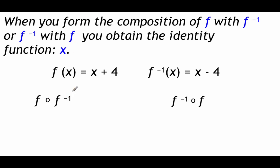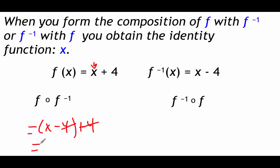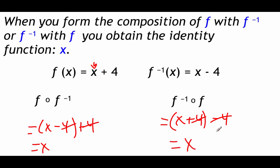If we go f composed with the inverse of f, we take this function f of x, and right where we see the x value, we plug in x minus 4. So it's going to say x minus 4 plus 4. The minus 4 and the plus 4 cancel each other out, so we're left with just x. If we run it the other way — the inverse composed with f — we take x minus 4 and plug in x plus 4 for that x value. So we get x plus 4 minus 4, and again the plus 4 and minus 4 cancel, so we get just x. These two functions are in fact inverses of each other.